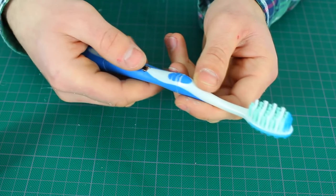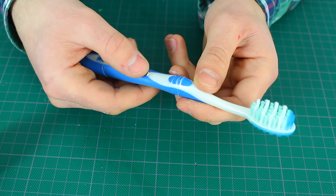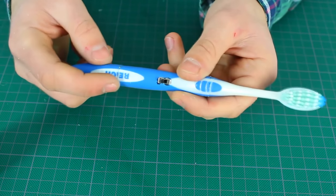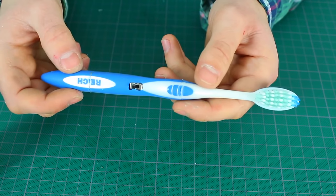That's all, guys! Our electric toothbrush is ready! If you want, you can easily remove the hot glue and change the battery.